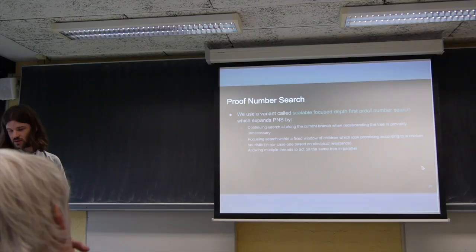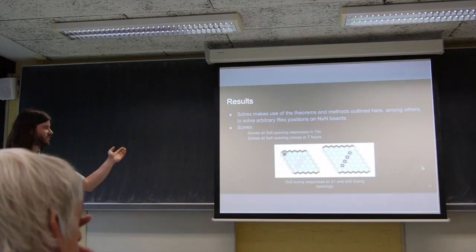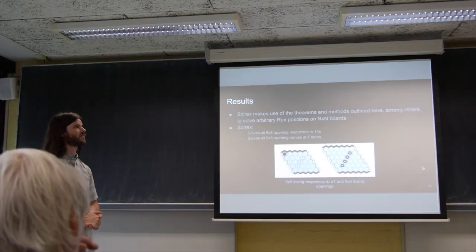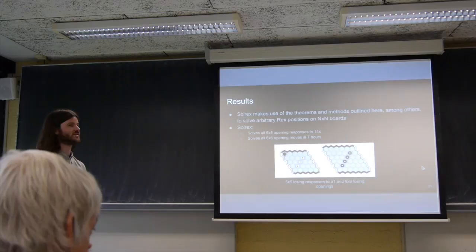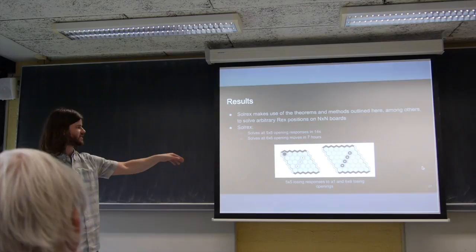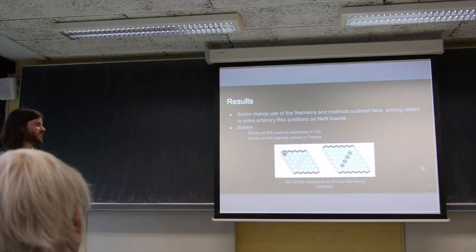Some results. So here's just a couple of positions. Basically, it takes us 14 seconds to solve the result of every 5x5 opening and around 7 hours to solve all the 6x6 opening moves. I should say 5x5 opening responses because it's a first player loss, so we now want to see which particular responses win for the second player. And then on 6x6, it's a first player win, so we want to see which particular responses win or lose for the first player. So the marked cells here are actually the losses. So there's an interesting pattern there. You might conjecture that that says something about arbitrary board sizes, but we have no proof of that.